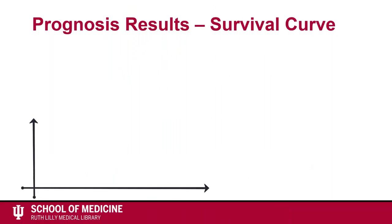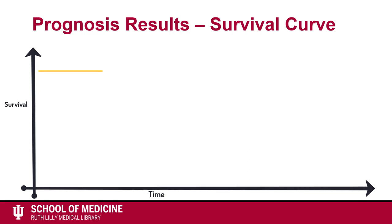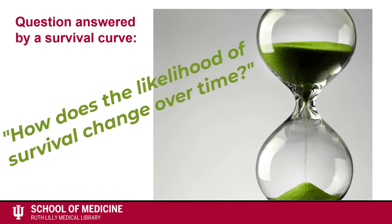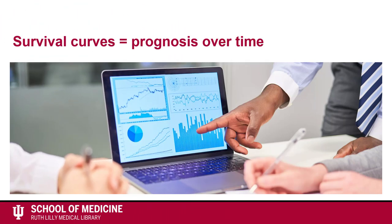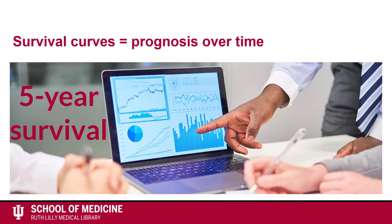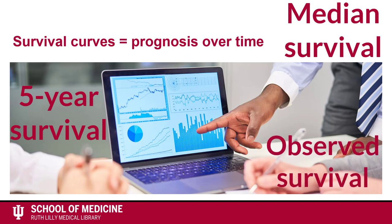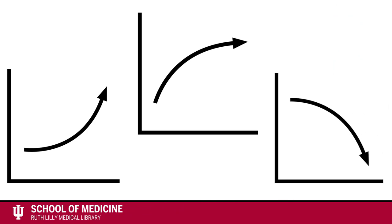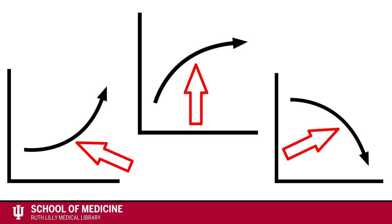The Kaplan-Meier curve is a visual representation of survival data. Survival curves help us understand prognosis over time and can be a helpful way of presenting prognosis results. The question answered by a survival curve is: how does the likelihood of survival change over time? As mentioned in a previous video, information like 5-year survival, median survival rate, and observed survival come from survival analysis. Often these numbers are found in survival curves, which are found in prognosis studies. The curves provide more information than absolute or relative prognosis values because, in addition to a point-in-time prognosis estimate, you can get information from the shape of the curve.